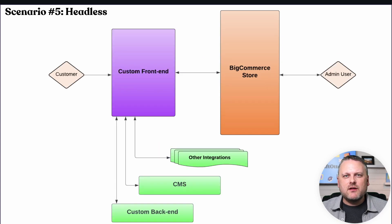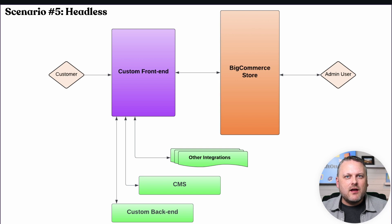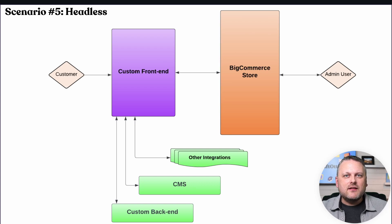The fifth scenario isn't really specific to BigCommerce at all, but it's interesting to include in our visualization because the user interaction inverts here. This is a full headless storefront — using BigCommerce in a fully headless capacity where customers are no longer interacting directly with your BigCommerce hosted storefront at all. Instead, you have built a custom storefront application that simply uses BigCommerce's APIs for e-commerce functionality, likely alongside other services you're consuming to provide various functionality for your headless application.